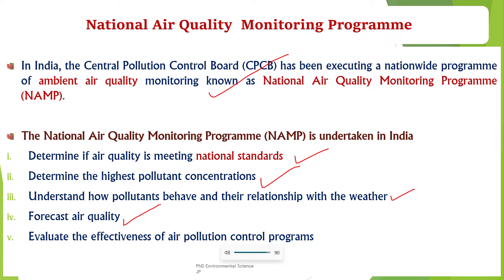The fourth objective is to forecast air quality. By analyzing historical data and trends, NAMP contributes to forecasting air quality. This is crucial for informing the public about potential health risks and for taking preventive measures in anticipation of poor air quality events.